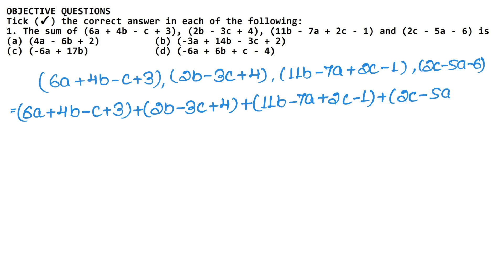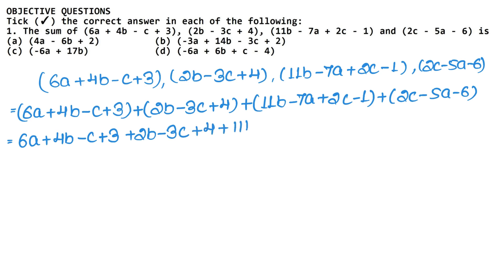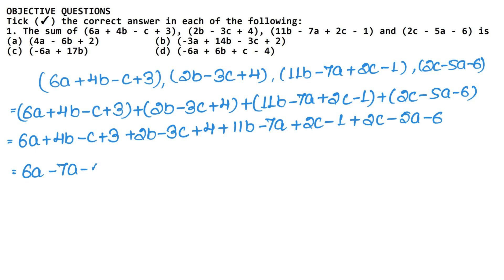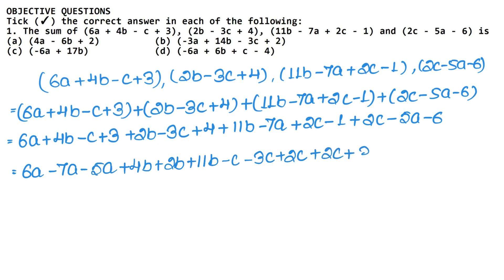So if we add: 6a plus 4b minus c plus 3, plus 2b minus 3c plus 4, plus 11b minus 7a plus 2c minus 1, plus 2c minus 5a minus 6. Now the a values are together, b values are together, c values are together, and constant values are together. So: 6a minus 7a minus 5a; b values: plus 4b plus 2b plus 11b; c values: minus c minus 3c plus 2c plus 2c; constants: plus 3 plus 4 minus 1 minus 6.